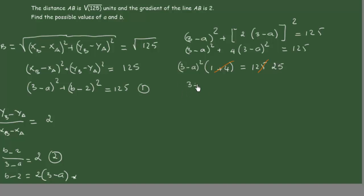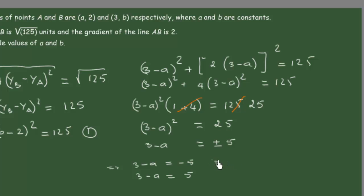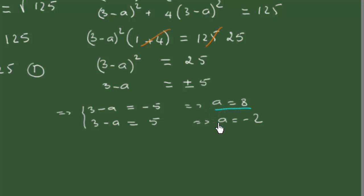Now we square-root both sides of (3 minus A) squared equals 25, giving us 3 minus A equals plus or minus 5. This means we have two cases: 3 minus A equals negative 5, which gives A equals 8; and 3 minus A equals 5, which gives A equals negative 2. So the two possible values of A are A equals 8 and A equals negative 2.